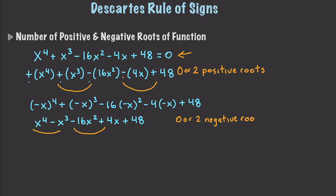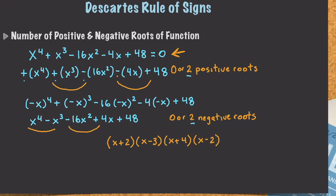And if we go and actually figure out what the factors are — the next part of this tutorial is going to show you another way to find factors — but in this situation I'll just jump to the actual factors for this equation. Those factors are x plus 2, x minus 3, x plus 4, and x minus 2. And you can see here that indeed we do have both two positive roots and two negative roots. And that is what Descartes' rule of signs tells us.